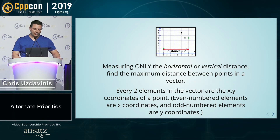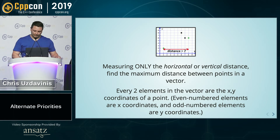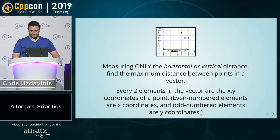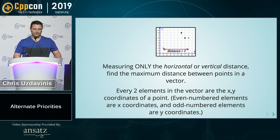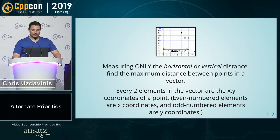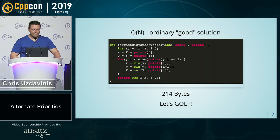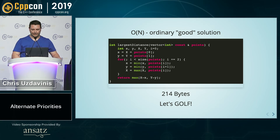So here's a problem. We have a vector of points. We're going to solve this problem by starting off with ordinary code and making it beautiful by being small. This is just taking the maximum horizontal or vertical distance between two points in a vector. The x points are going to be the even indices and the y points will be the odd indices. Here's some basic solution — it finds the min max x and y and then takes the max distance between them. But it's 214 bytes. So this is crap.